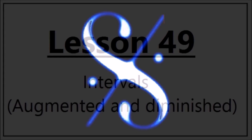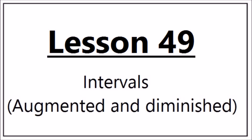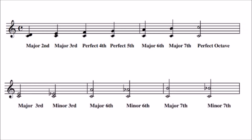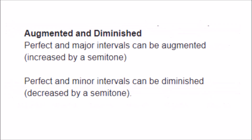Music theory: a complete course from grades 1 to 5, lesson 49 — intervals: augmented and diminished. In lesson 37 you learned the prefixes major, minor, and perfect as applied to intervals. To summarize: fourths, fifths, and octaves are perfect, and seconds, thirds, sixths, and sevenths are major if they occur in the major scale of the lowest note. Minor intervals are simply a semitone less than major intervals. Note that there is no such thing as a minor fourth or minor fifth. In this lesson there are two more prefixes as applied to intervals: augmented and diminished.